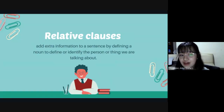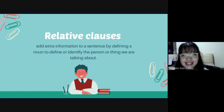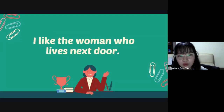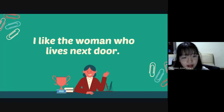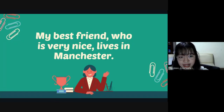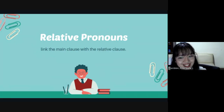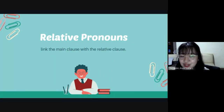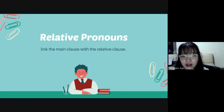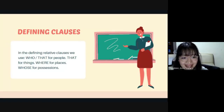First, let me define relative clauses. Relative clauses add extra information to a sentence by defining a noun or identifying the person or thing that we talk about in a sentence. For example, in this sentence, the one we talked about is the woman, and the additional information here is 'who lives next door.' In the next sentence, the one we talked about is the best friend, and the additional information here is 'who is very nice.' Before we proceed to non-defining and defining clauses, let me introduce the relative pronouns we might encounter. These are: who and that for people, that for things, where for places, and whose for possessions.